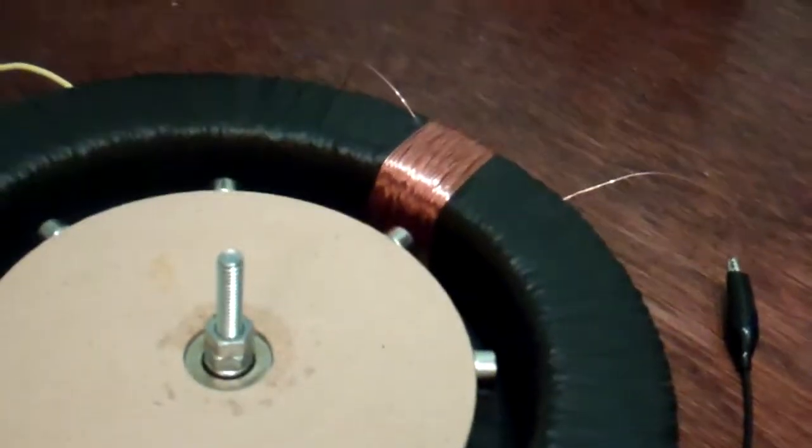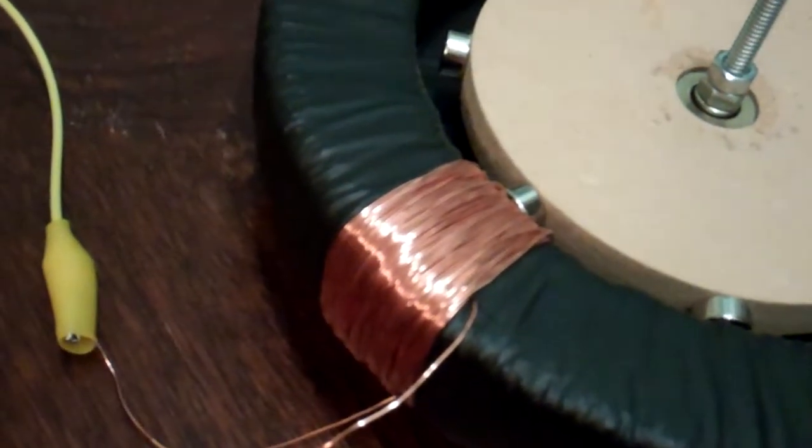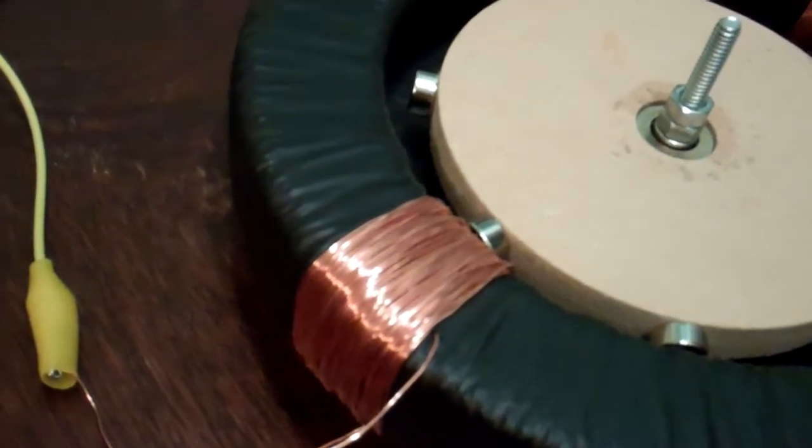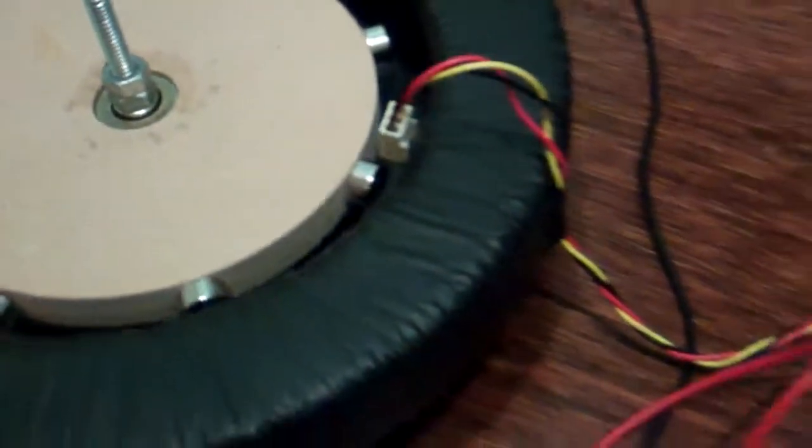Two coils, not sure what the gauge is, came out of an old tube TV. Thanks Russ for the tips on harvesting electronics. Hall effect sensor, placed at a 45 degree angle, which will trigger the current as soon as the magnets line up.